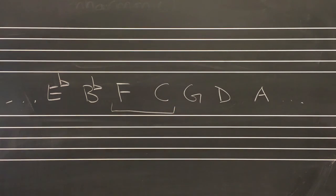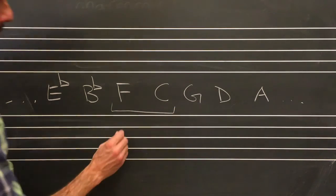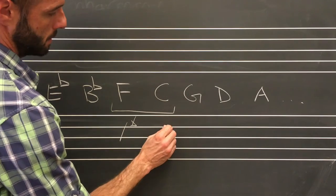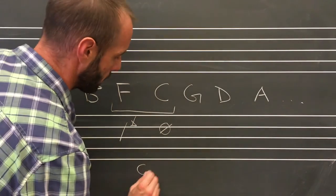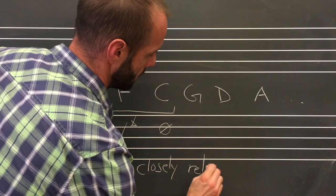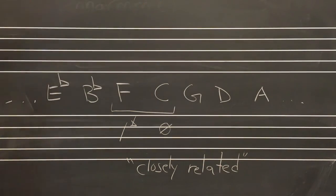Scales that have only one difference between them are neighbors on the circle of fifths. Scales that are adjacent on the circle of fifths have what we call closely related keys.